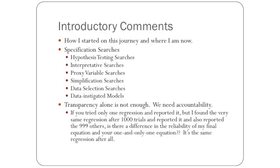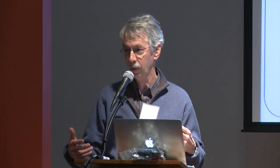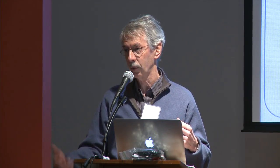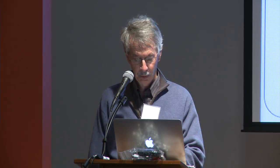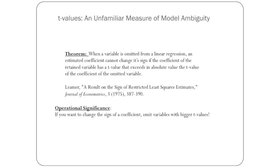Both statistical uncertainty and model ambiguity have to be recognized and built in, in order to turn transparency into accountability. It's not enough just to see what somebody has done. You've got to know how to map what they've done into measures of statistical uncertainty and model ambiguity. There are two sources of model error: statistical uncertainty and model ambiguity. I'm going to do S-values — S stands for sturdy. And T-values are an unfamiliar measure of model ambiguity.